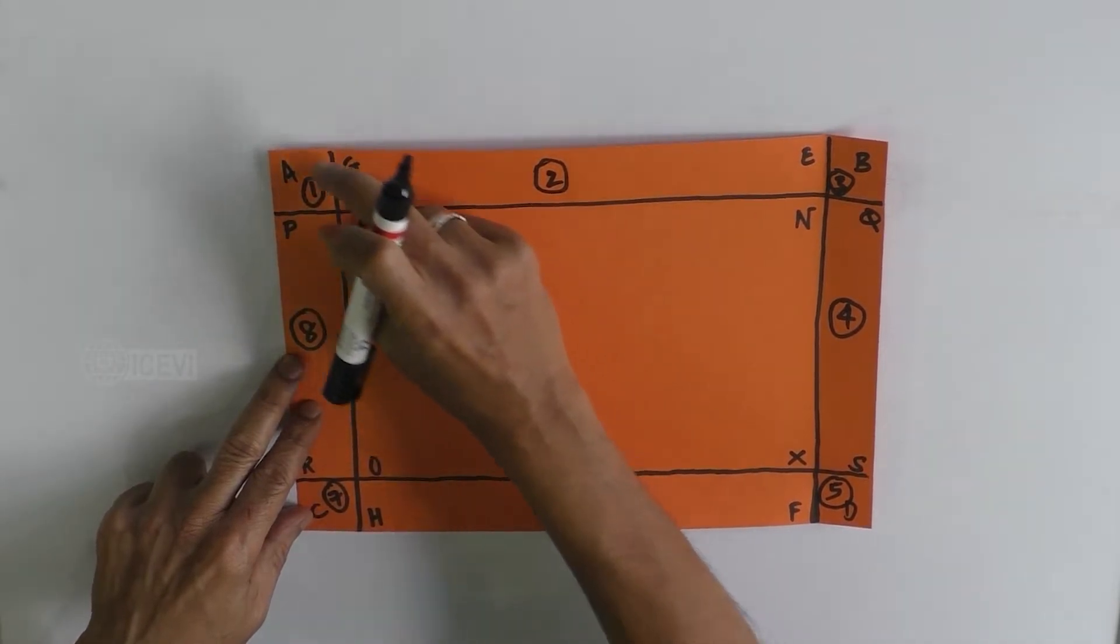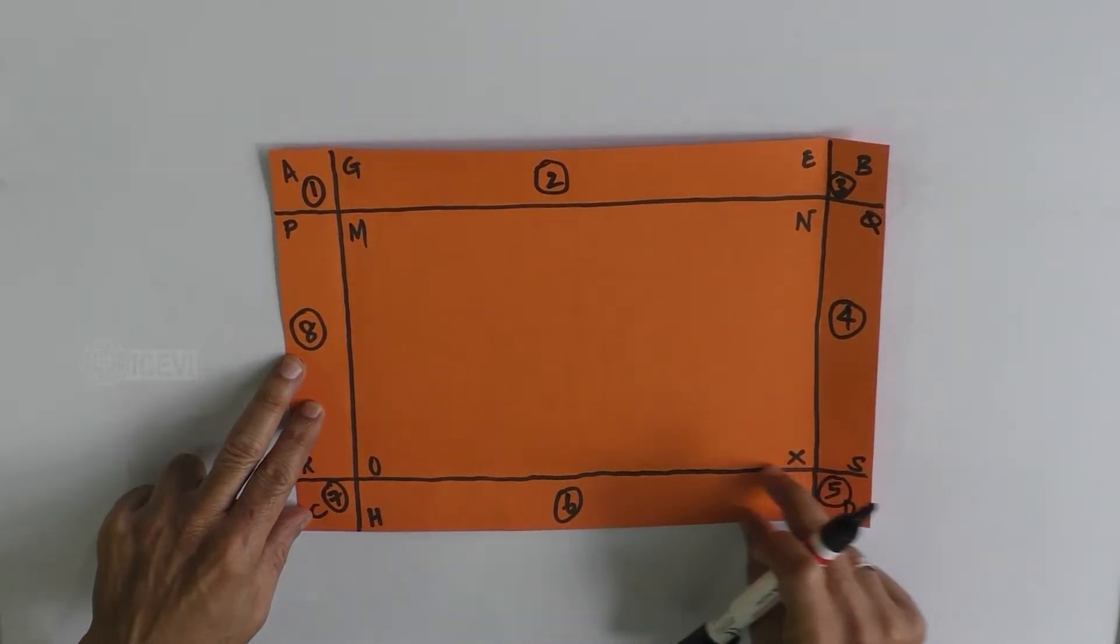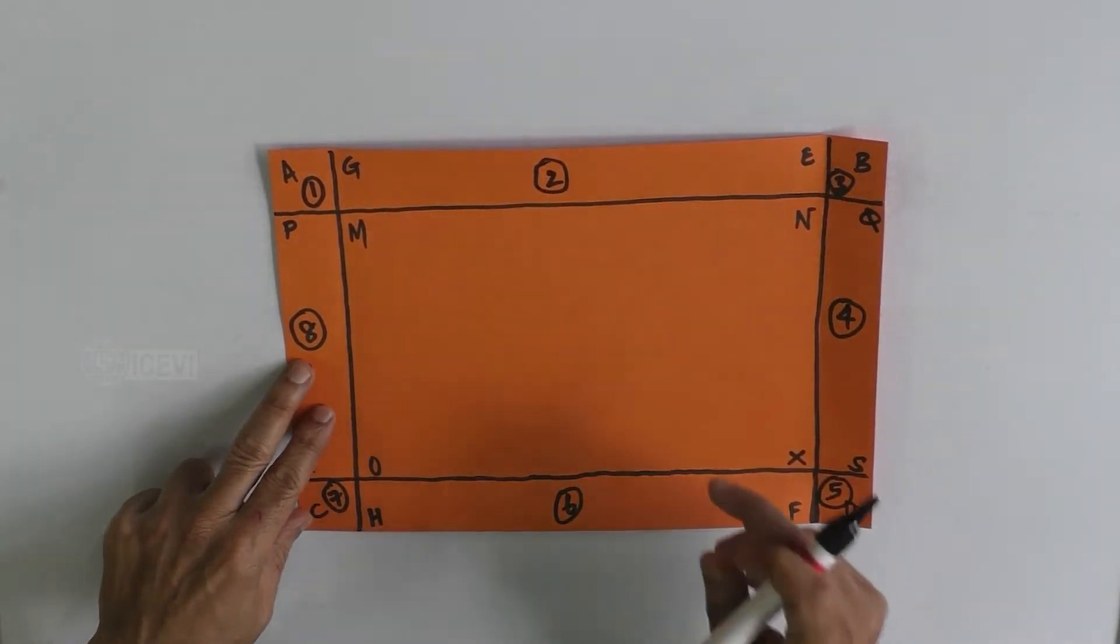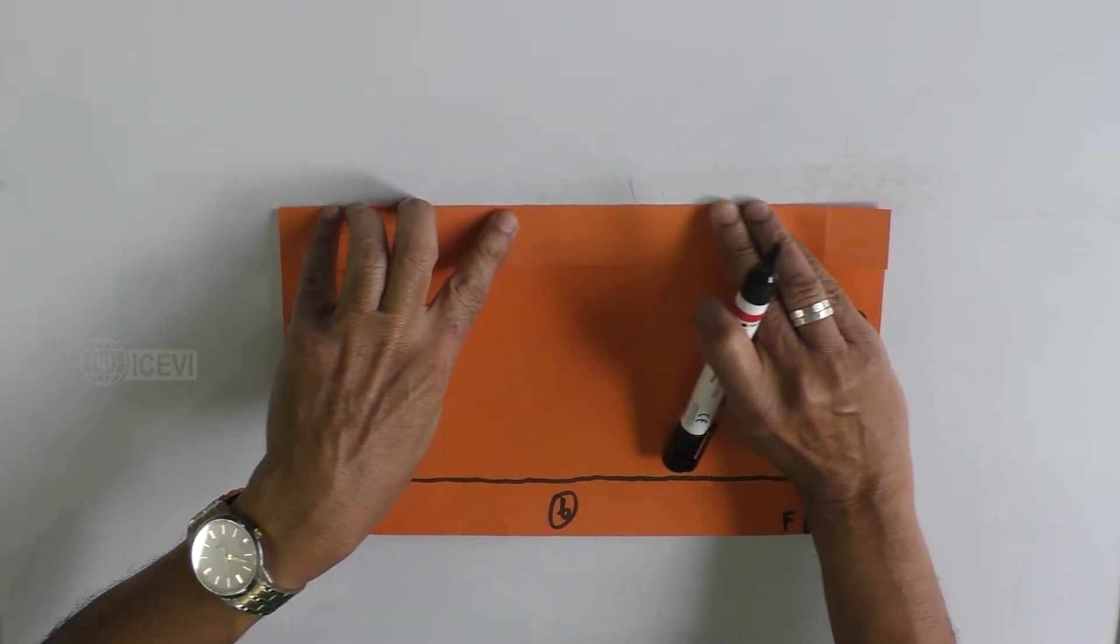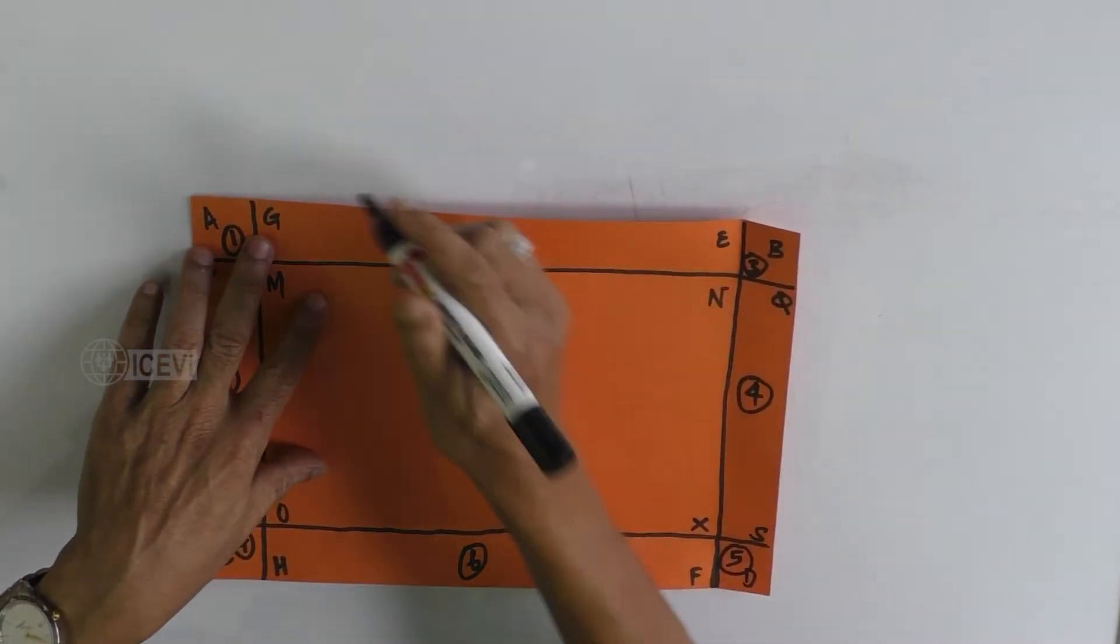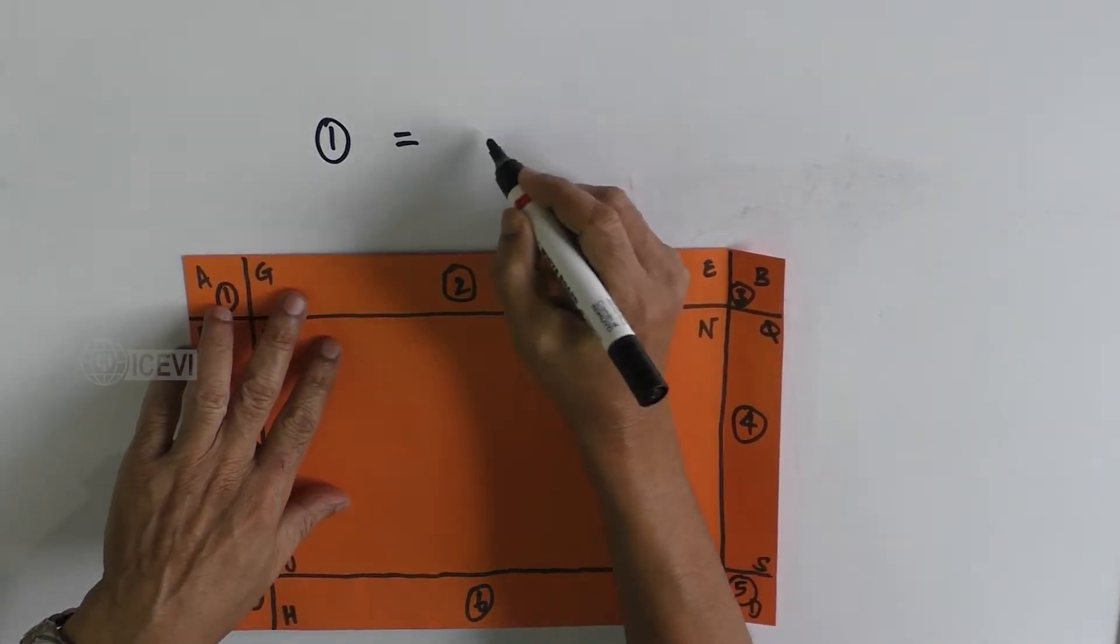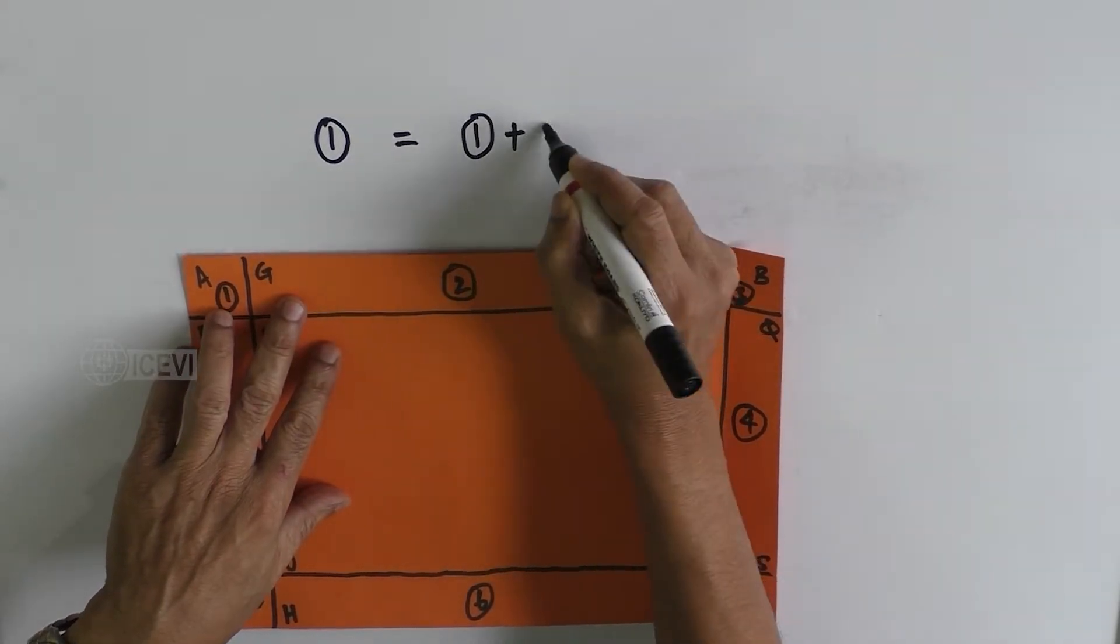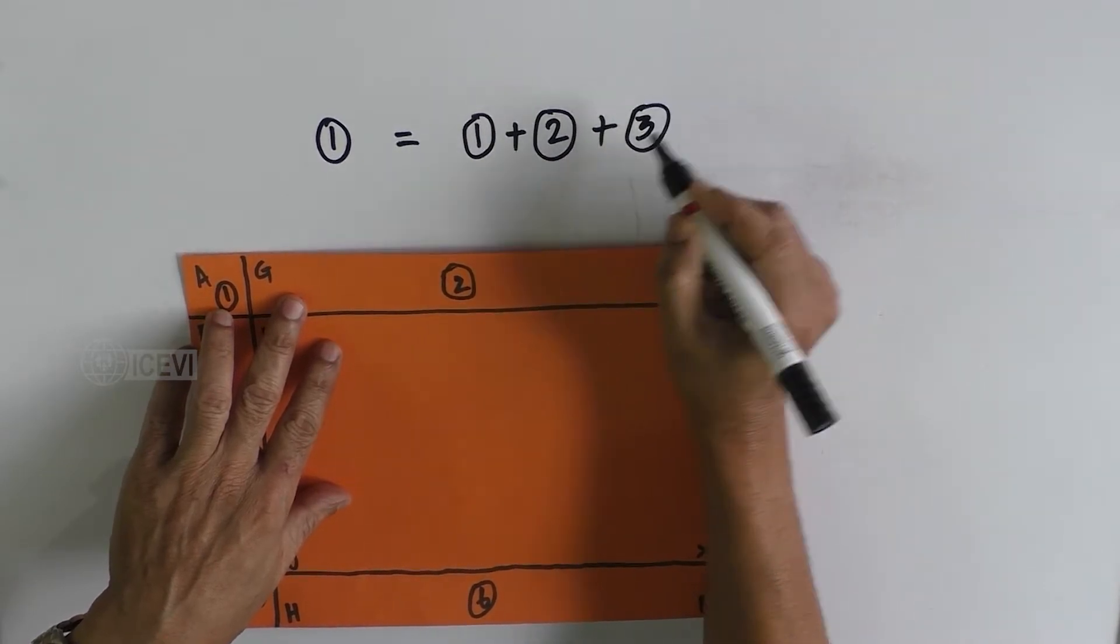Why are the corner boxes one, three, five, and seven squares? Because the width of this path is uniform on all four sides of the field. Now suppose we take the path on the top, let us call that as path one. Path one is inclusive of the area of box one plus area of box two plus area of box three.